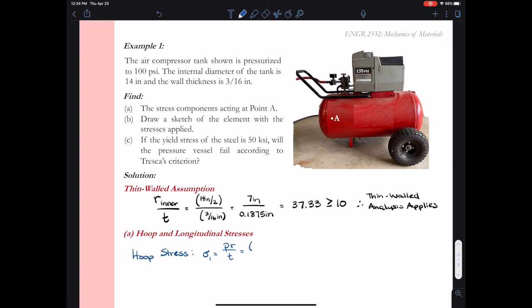Substituting the known values from this problem, the pressure inside this cylinder is 100 psi, the radius is 7 inches, and our thickness is 3/16th inch. So I calculate sigma 1. Sigma 1 is going to be 3733 psi, or 3.733 ksi.